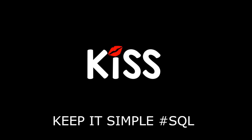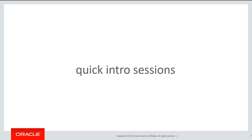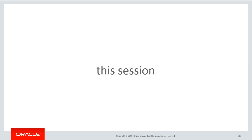Hi everyone, my name's Connor MacDonald. Welcome to the KISS series, the Keeping It Simple with SQL, focusing on partitioning. Each of these sessions are quick introductory sessions into the topic of partitioning, but unlike other tutorials, these are focused on developers. In the world of DevOps, developers now have to understand some of the physical design characteristics of partitioning. In this session, we're going to talk about local versus global indexes and why you would choose one over the other.